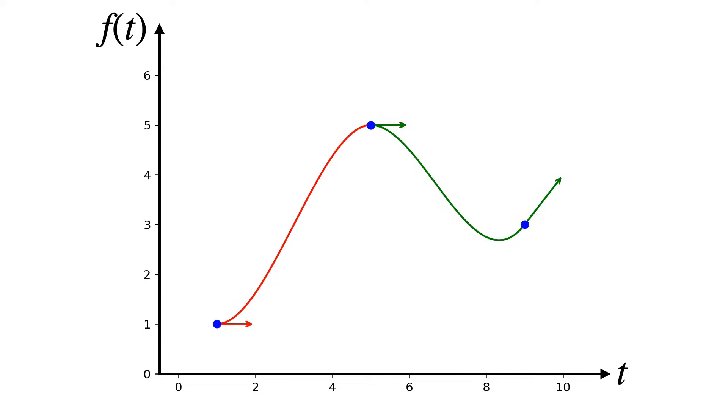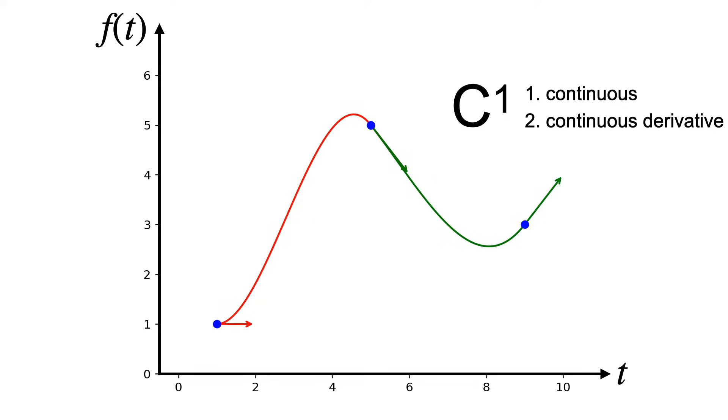There's a special name for this kind of continuity. It's called C1, and now you can move the two tangents together to get different C1 curves.